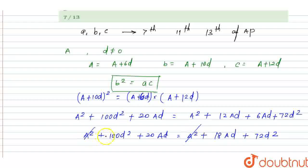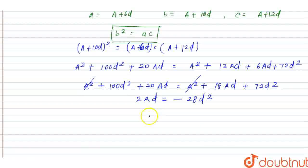A² cancels out. We get 20Ad - 18Ad = 2Ad, and 72d² - 100d² = -28d². So 2Ad = -28d².